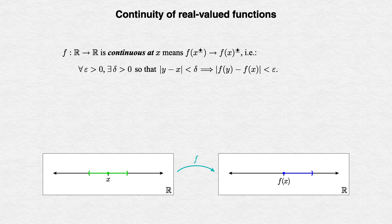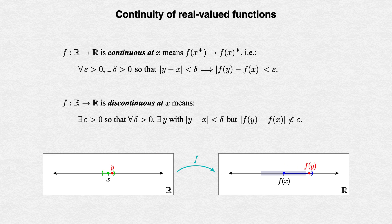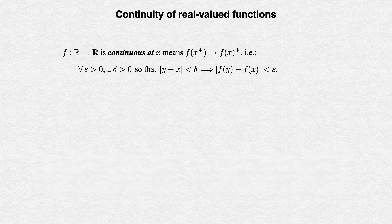If we put those sets into the function f and we see the outputs doing anything other than squeezing closer and closer to f(x), then the function f is not continuous at x. The precise meaning of this is given by logically negating our formal definition of continuity at x. It says that there exists some positive radius epsilon giving a target, so that no matter how small we make delta, there exists a point within delta of x that f doesn't send to a point within epsilon of f(x). In other words, there exist points as close to x as we like that don't land inside that fixed target.